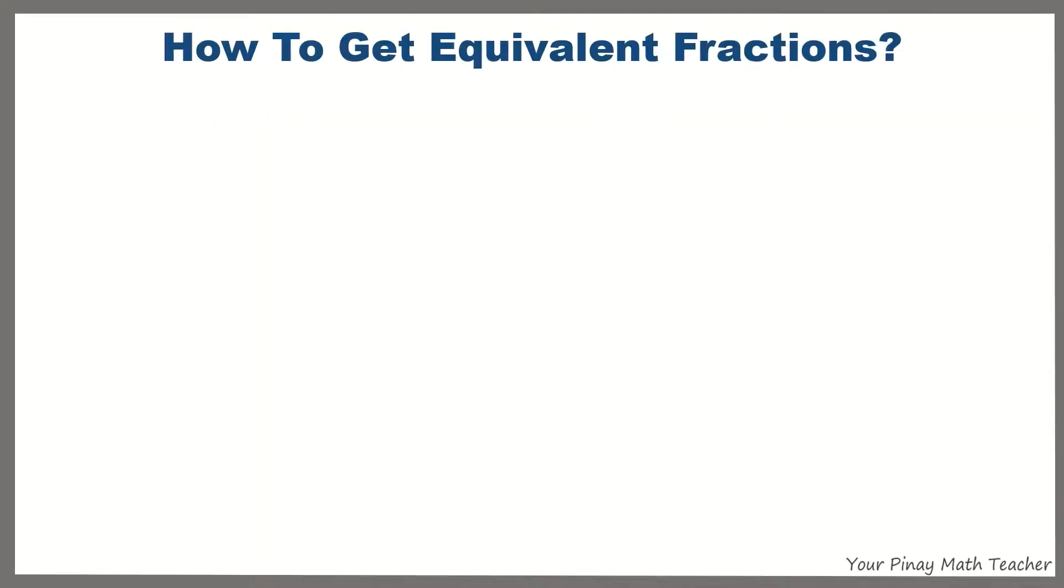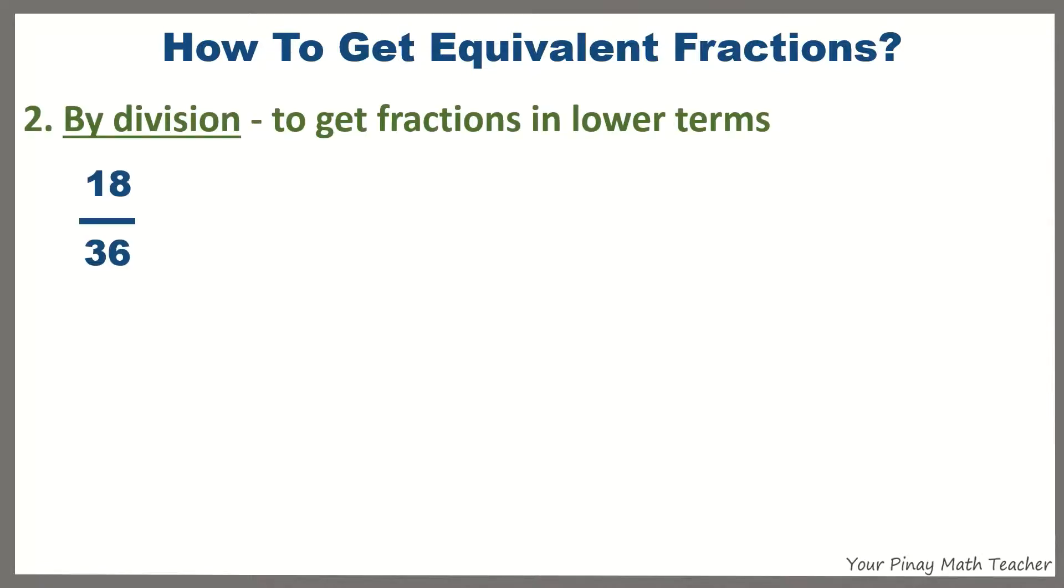How to get equivalent fractions in lower terms? You do division. You divide both numerator and denominator of the given fraction by a common factor or divisor.